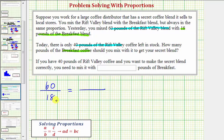Notice how this ratio is comparing the amount of Rift Valley to the amount of the breakfast blend. Therefore, the second ratio must be set up in the same way. Today there are only 40 pounds of the Rift Valley coffee, so the 40 would go on top, and the amount of the breakfast blend here is unknown, which we'll let be equal to x.